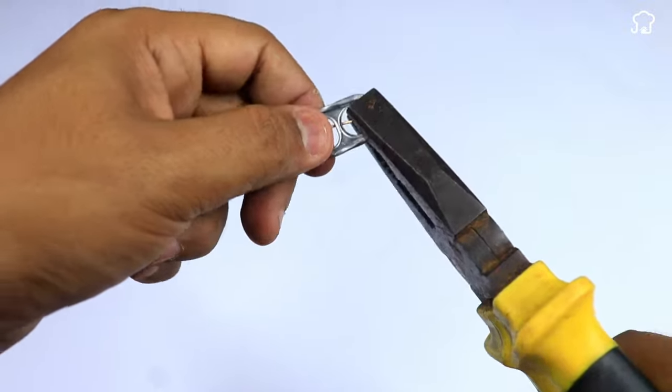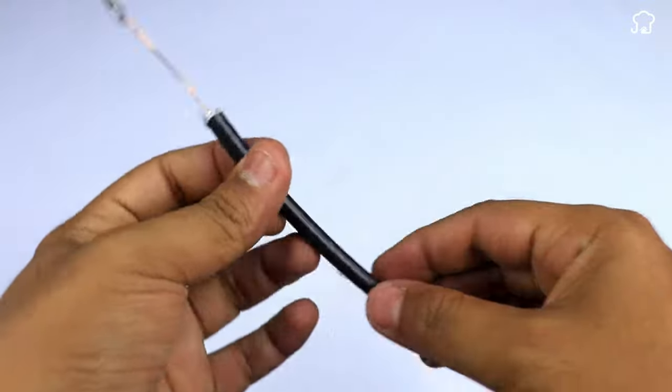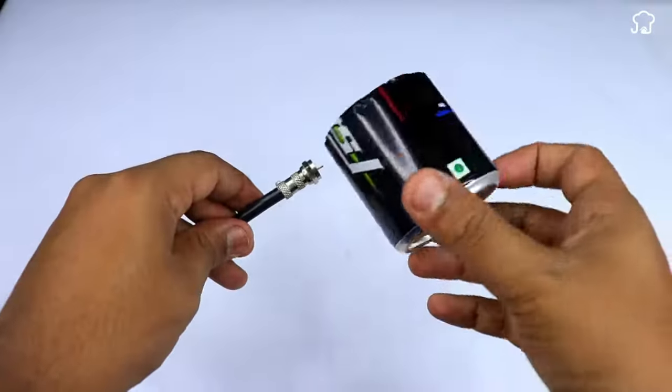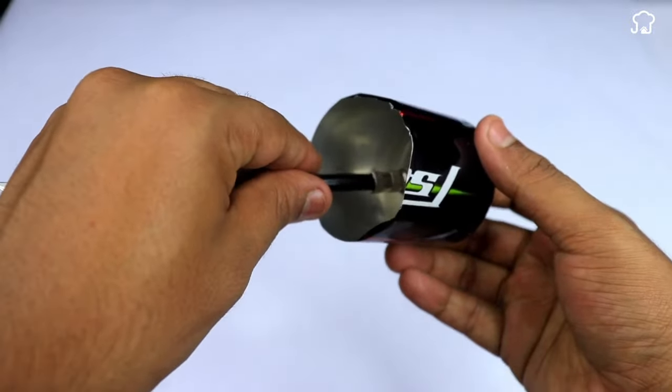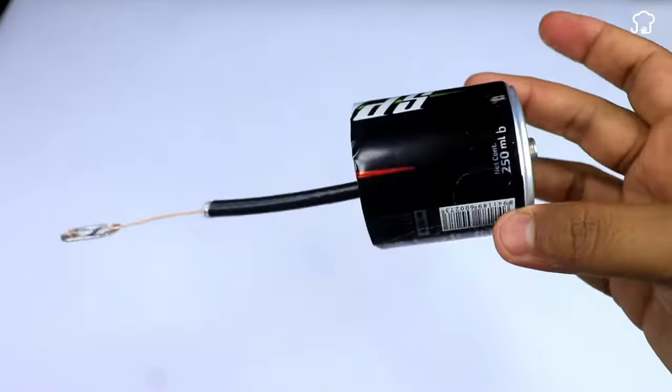With this we will have the antenna receiver ready. Then we will connect the female cable adapter with the coaxial adapter that we had put in the aluminum can. We almost have the antenna ready.